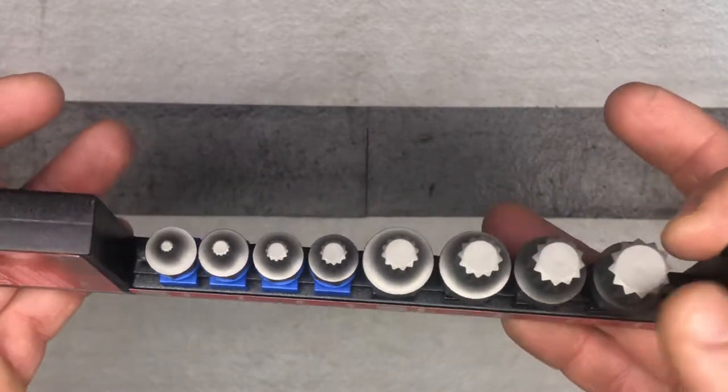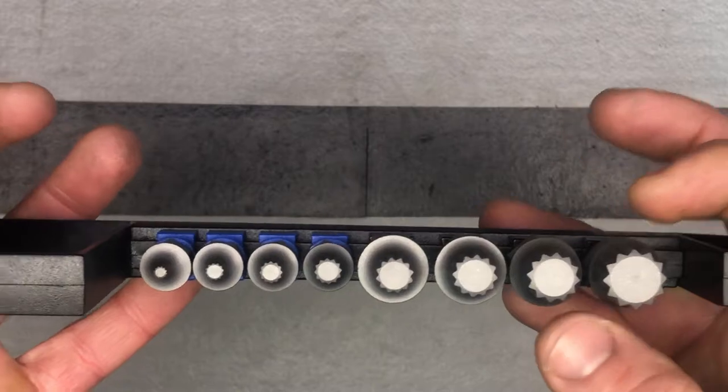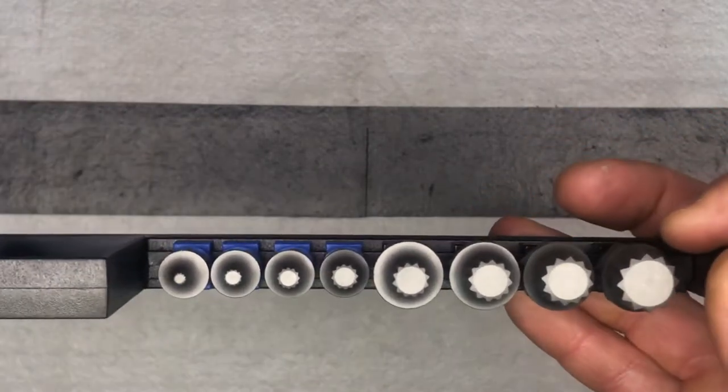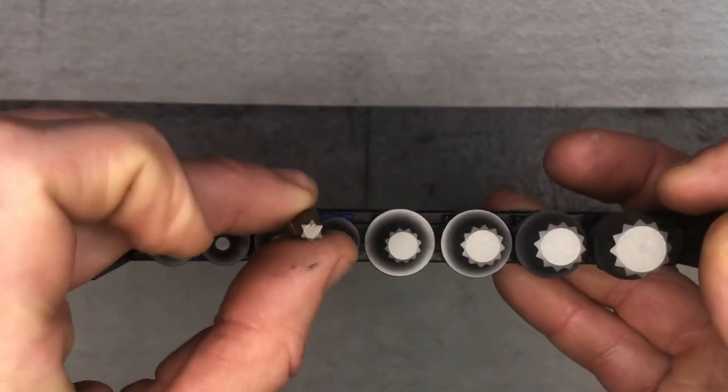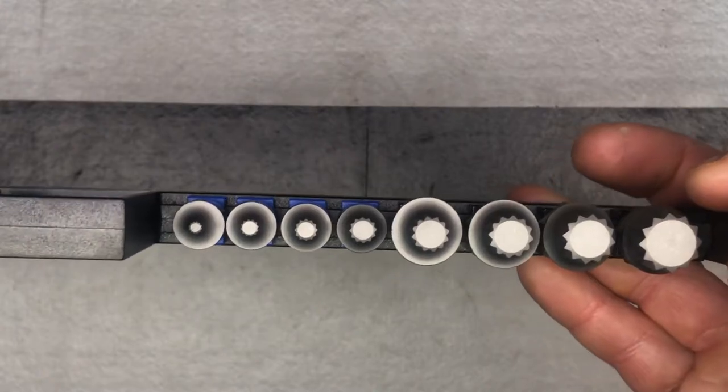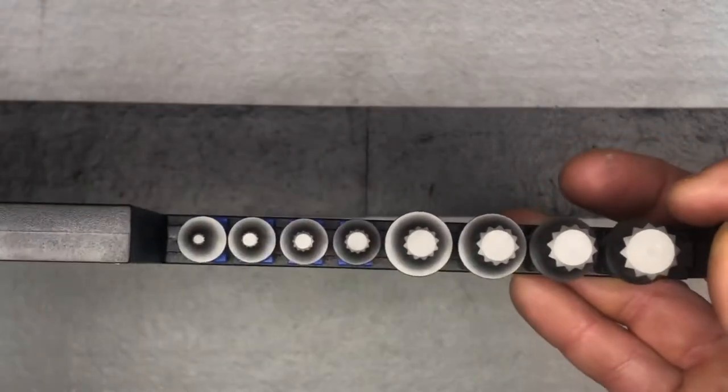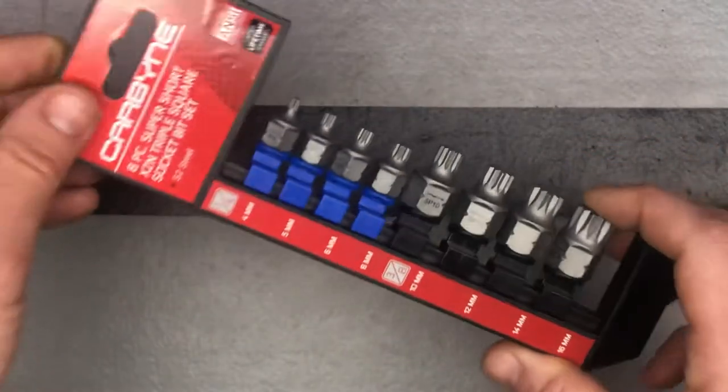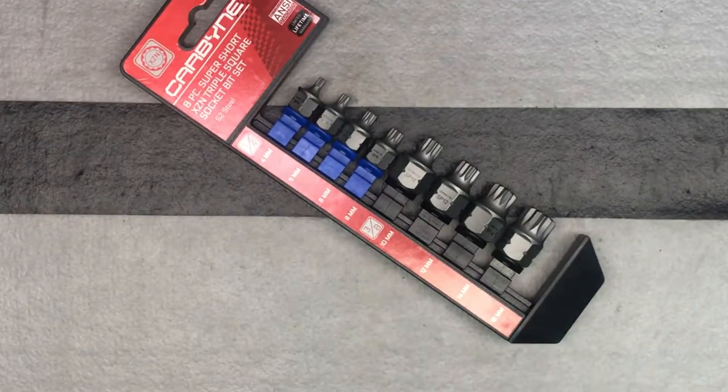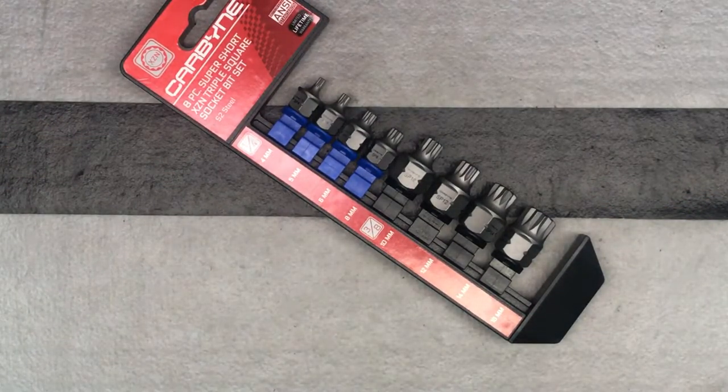They look somewhat like torx, but those of you in the know know that they're not the same as torx and they will not work the same as torx. So give you a little idea - there's a torx. You can see there's a lot more points here, and the main reason is so they generate more torque. These are really for high torque applications is where you find these fasteners, and that's where you're going to need to use these.